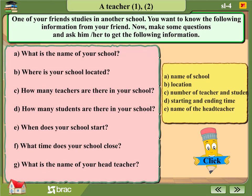What is the name of your school? Where is your school located? How many teachers are there in your school? How many students are there in your school? When does your school start? What time does your school close? What is the name of your head teacher? Now write a short paragraph on your friend's school. You can use the answers of the questions you have just asked and answered.